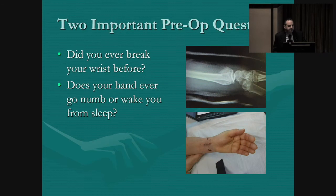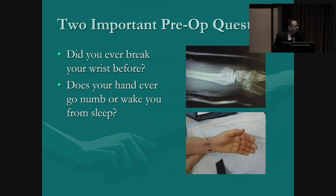There are two important questions to ask preoperatively if you're thinking about using a volar plate. First: did you ever break your wrist before? Because if there's a deformity from an old fracture, the standard volar distal radius plates likely won't fit properly. Second: does your hand ever go numb or wake you from sleep? If people have preexisting carpal tunnel syndrome and you don't address that, even if they're not symptomatic, you may end up taking the patient back to the operating room when they present at two weeks with swollen hands and numb fingers. Better to take care of both problems at the same time.